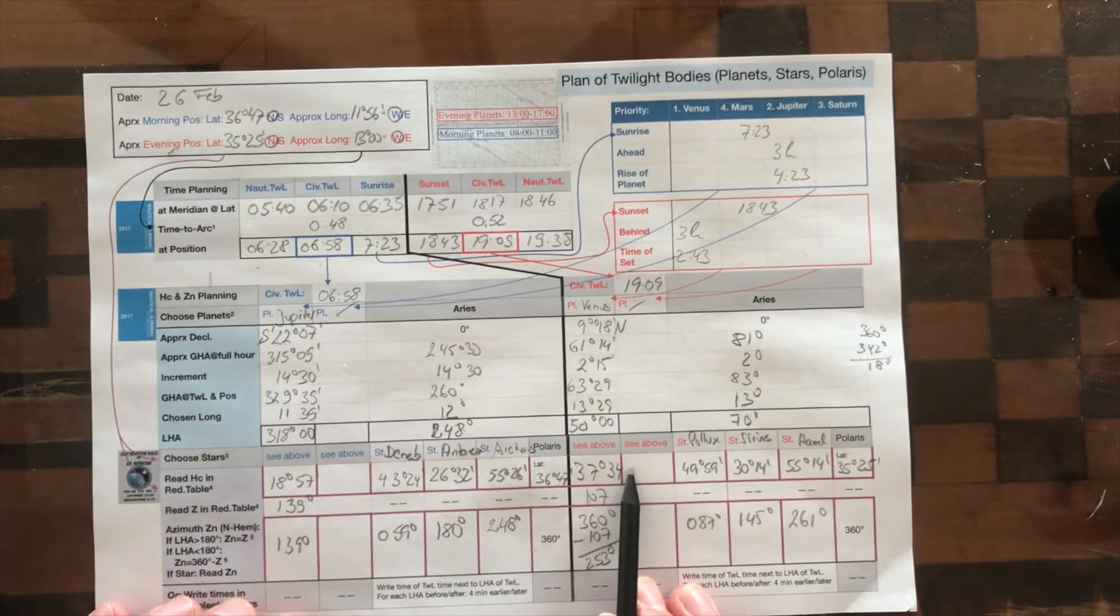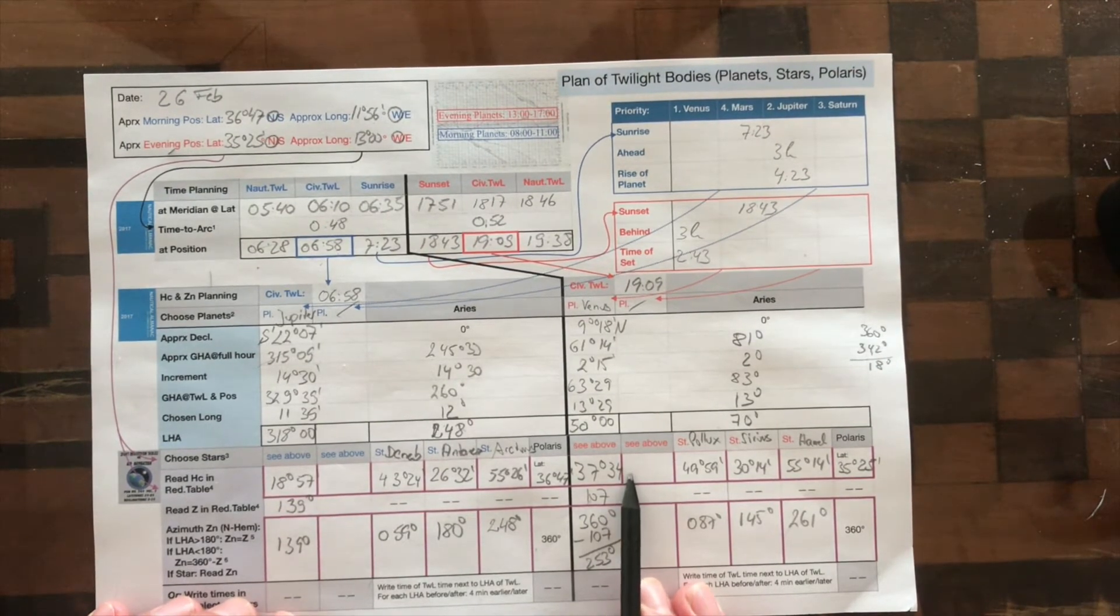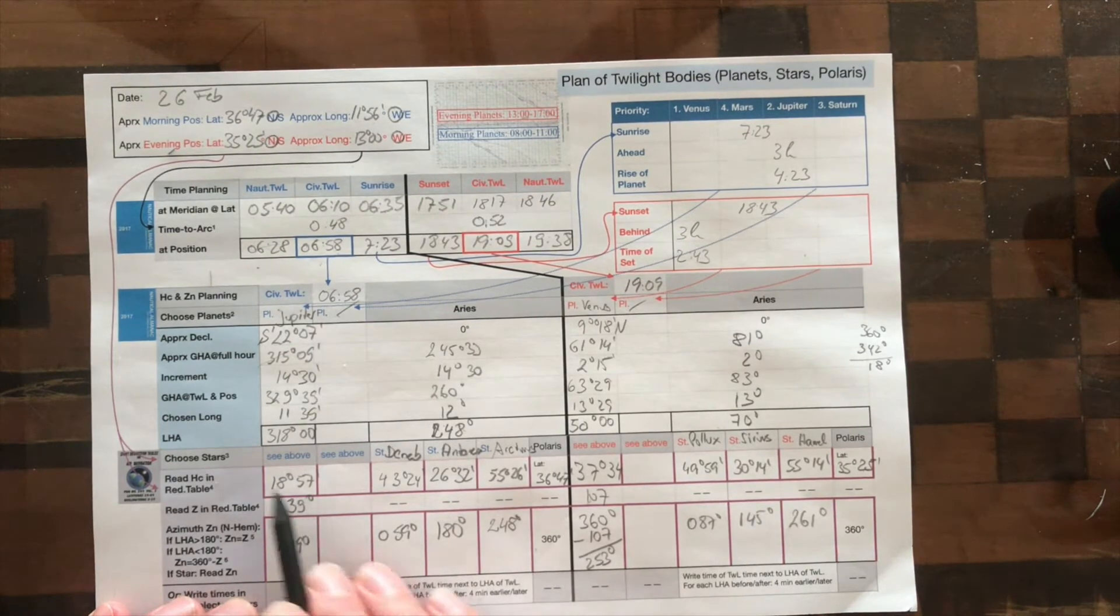So you have the six P's as you might remember. Six P's. Proper preparation prevents pathetically poor performance. So this is all prepared.